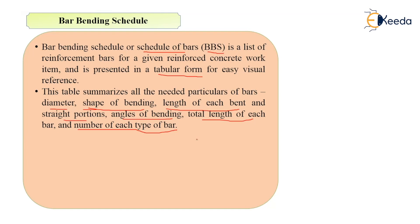It gives you the diameter — for example, as I will show you in the next slide — the bar bending schedule will have the diameter of various types of bars: 8mm, 10mm, 12mm, or whatever diameter it is. Then shape of bending — for example, if it is an anchor bar, how that particular anchor bar has been put, or what will be the shape of that particular bar, then the length of each bend.